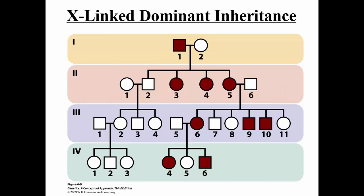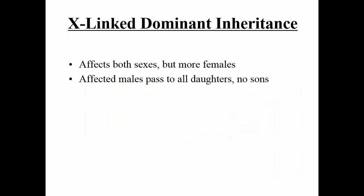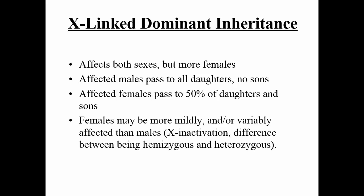For X-linked dominant inheritance, it affects both sexes but more often females — because they have two chances at having the abnormal gene and only need one copy. Affected males pass it on to all of their daughters but none of their sons. Females may be more mildly or variably affected than males.